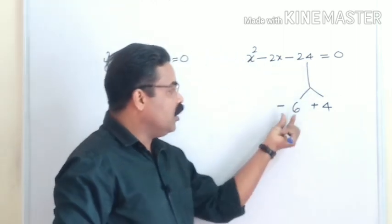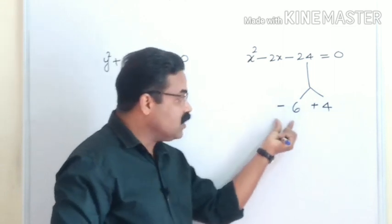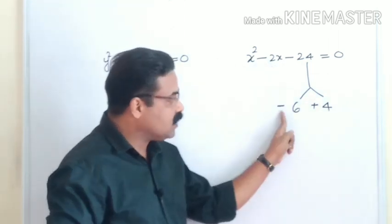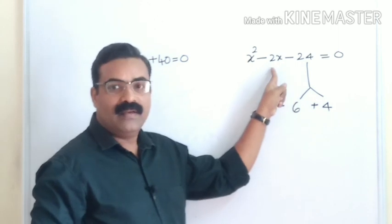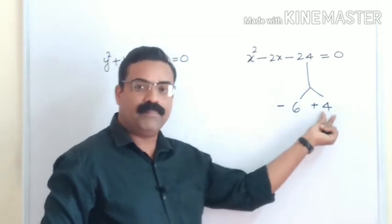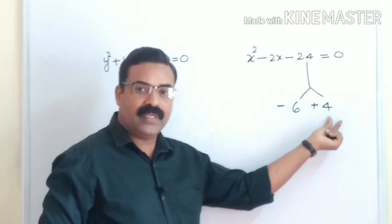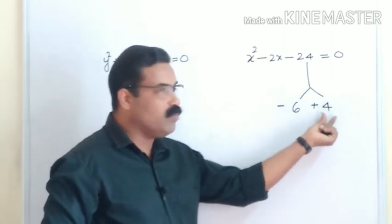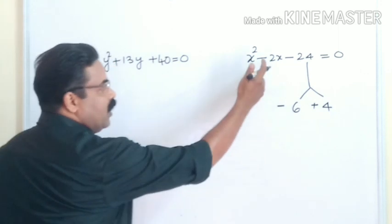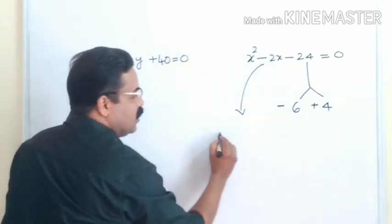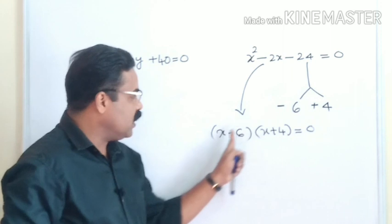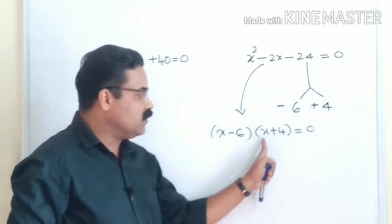We took −6 and +4 because their sum gives −2. If we had taken +6 and +4, we would get +10, not −2. And −6 × +4 = −24 since minus times plus is minus. Now write the equation as (x − 6)(x + 4) = 0. Equating each factor: x − 6 = 0 gives x = +6, and x + 4 = 0 gives x = −4.